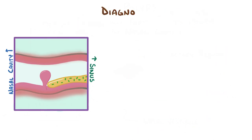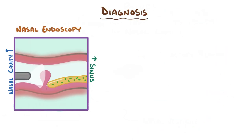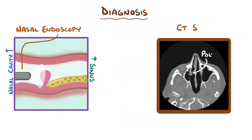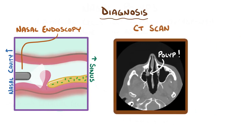Nasal polyps are diagnosed visually with nasal endoscopy or by medical imaging with a CT scan. Diagnosis is often made after clinical symptoms become problematic, but changes to the respiratory mucosa can be detected even in their absence.